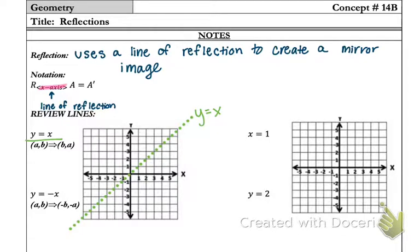So another common line of reflection is the line y equals negative x. So this line I've done in pink still goes through the origin, but it's going down 1 over 1, so it just has a negative slope. What I'm going to do is go ahead and plot the point negative 2, 4.